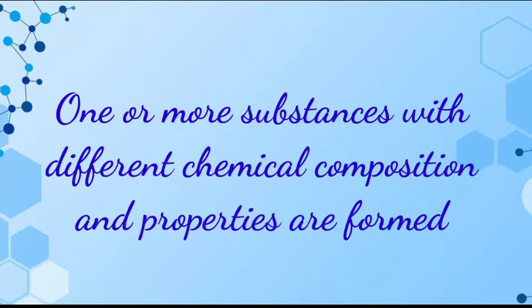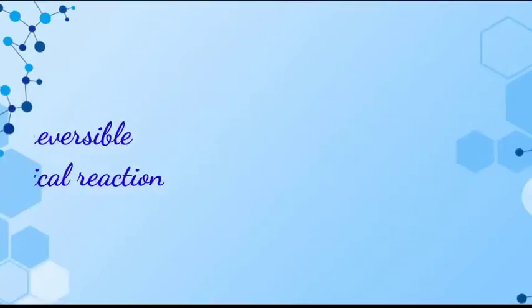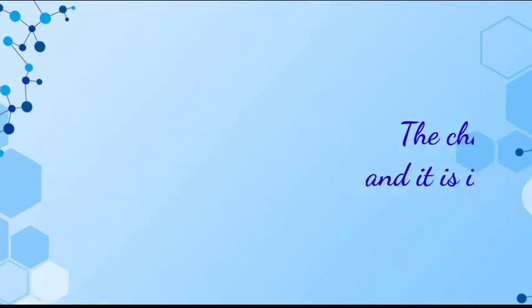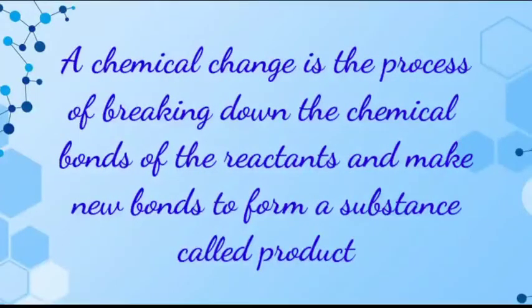The change is not easily reversible. A chemical change always involves a chemical reaction. A chemical change is the process of breaking down the chemical bonds of the reacting substances, called reactants, and making new ones to form substances known as products.